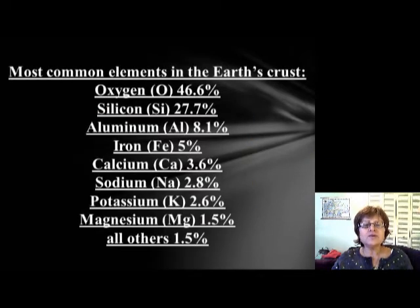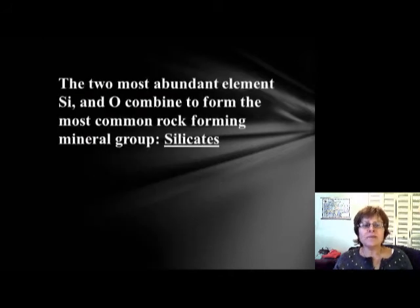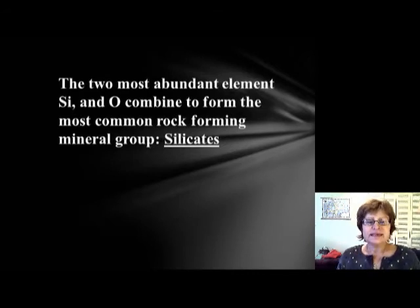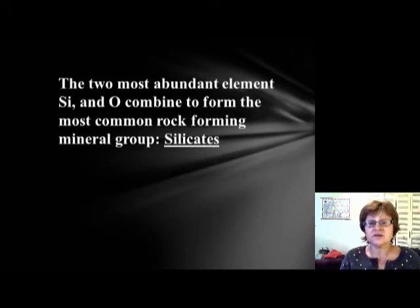The two most common elements in the Earth's crust are oxygen and silicon. They form the most common rock-forming mineral group, which we call silicates.